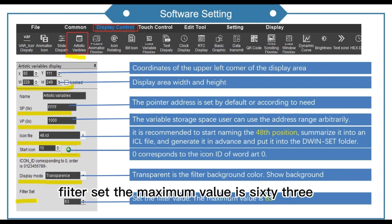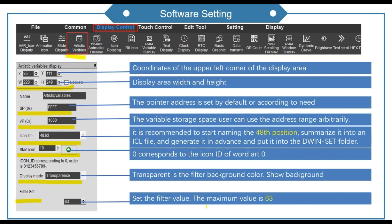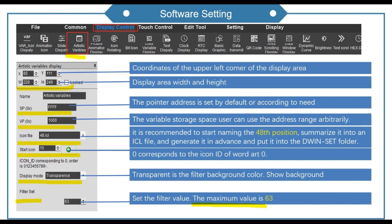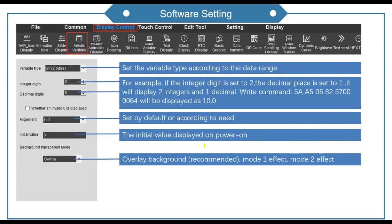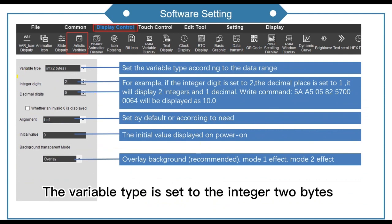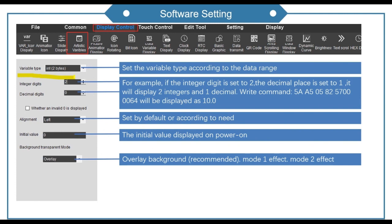The filter maximum value is 63, so I set 63. The variable type is set to integer 2 bytes.